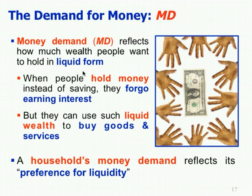Money demand reflects how much wealth people want to hold in liquid form. When you hold wealth in liquid form — when you hold money — you forgo earning interest, but you can use the liquid wealth to buy goods and services. That's the trade-off. A household's money demand reflects its preference for liquidity, which is why we are going to be developing the theory of liquidity preference.